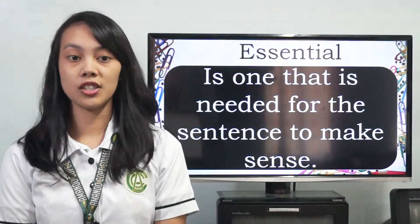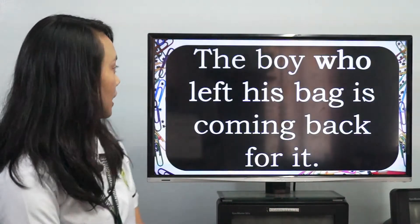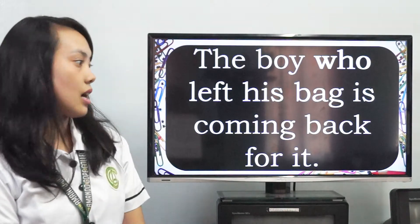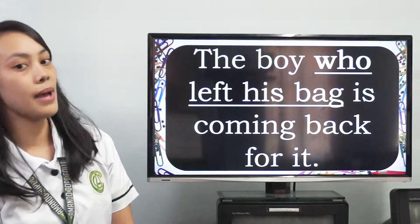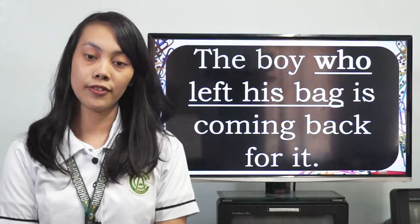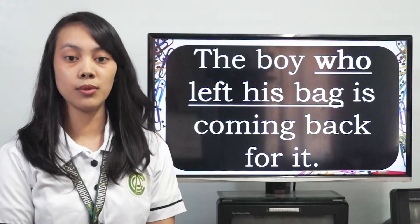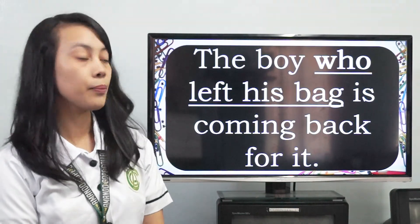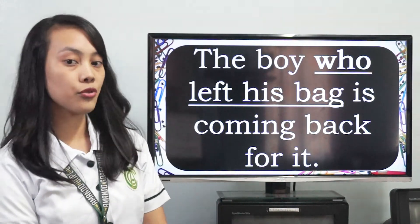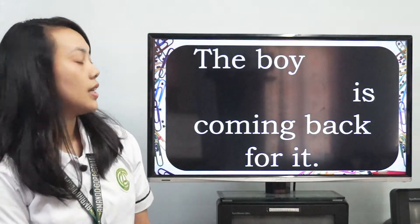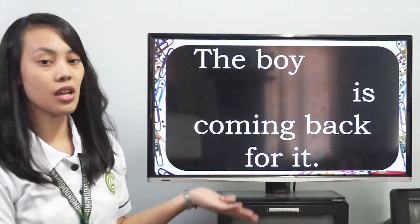The essential clause will tell you which one the writer is referring to. Here's an example: The boy who left his bag is coming back for it. The relative clause in this sentence is who left his bag. The essential relative clause modifies or defines the noun so we are able to distinguish who that particular boy is. If you remove the clause, the meaning will change and it doesn't make sense — like this: The boy is coming back for it.